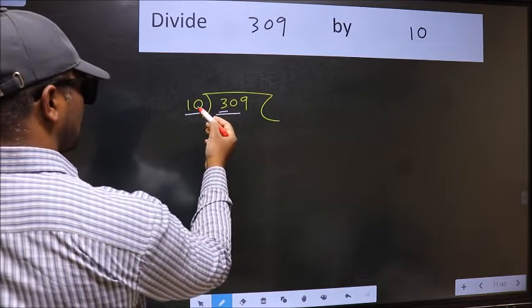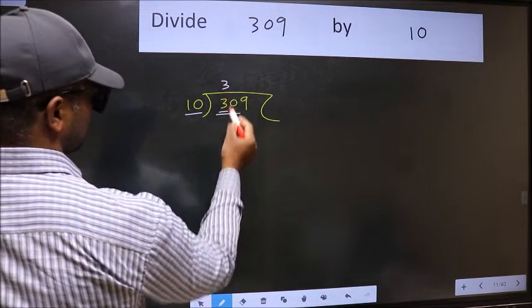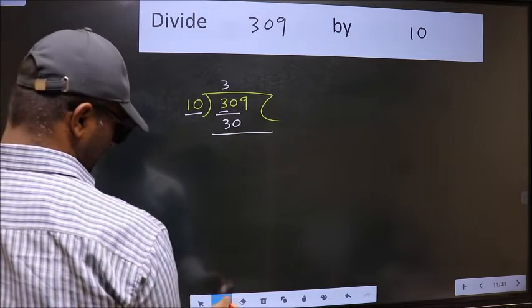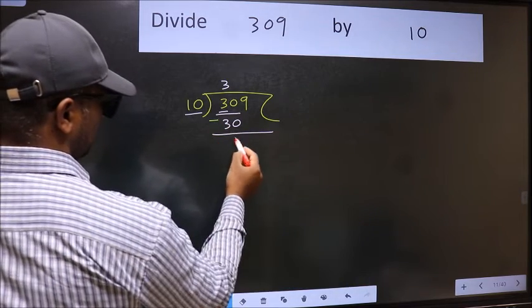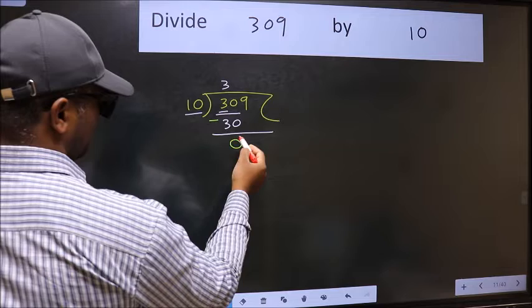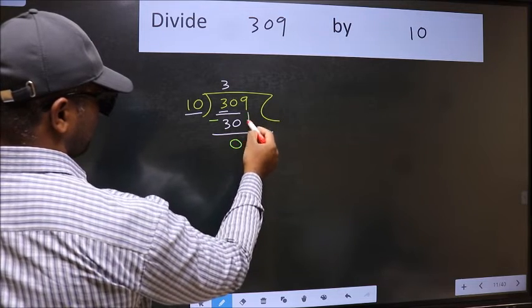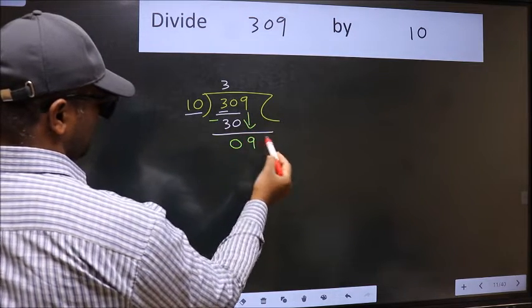When do we get 30 in 10 table? 10 times 3 is 30. Now we should subtract. We get 0. After this step, bring down the beside number, so 9 down.